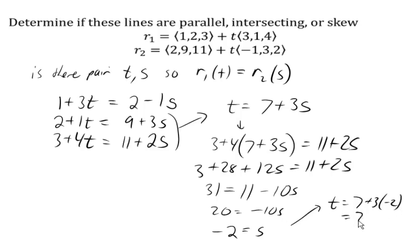So this is telling us that when t is 1 and s is negative 2, that the y components are equal and the z components are equal. But that doesn't necessarily mean that the x components are going to be equal.